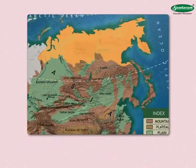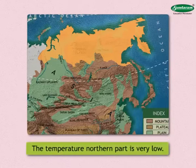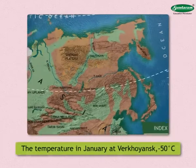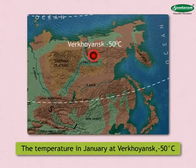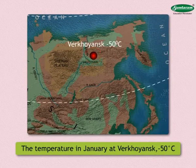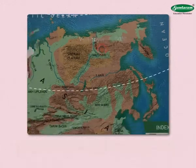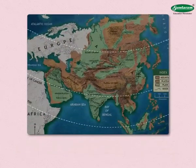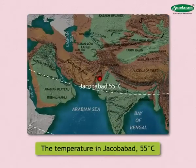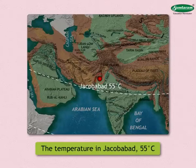As the northern part of Asia is very near the North Pole, the temperature there is very low. The temperature in January at Verkhoyansk, where the minimum temperature in the world is recorded, is as low as minus 50 degrees Celsius. On the other hand, Jacobabad in Pakistan records the maximum temperature of 55 degrees Celsius in the world.